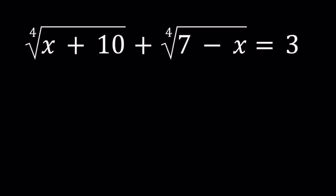Hello everyone. In this video we're going to be looking at a radical equation. We have the fourth root of x plus 10 plus the fourth root of 7 minus x equals 3.